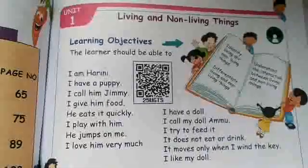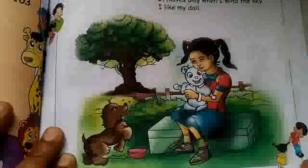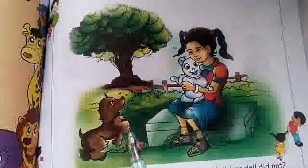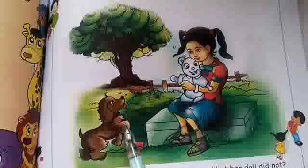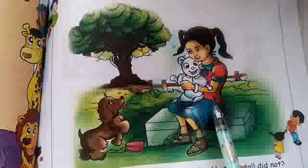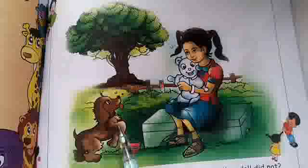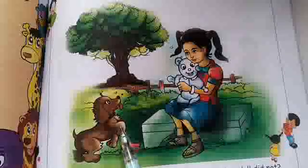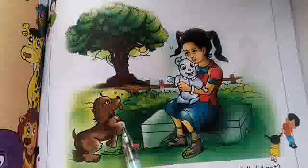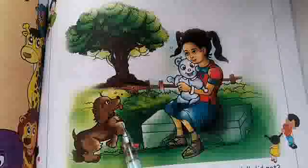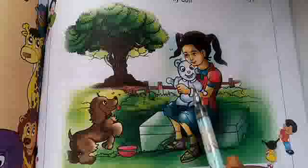In this lesson, they are introducing a girl. The girl has a puppy. The puppy's name is Jimmy. She gave food to Jimmy. Jimmy is eating quickly. Jimmy is playing with her and he jumps on her. She loves her puppy very much.